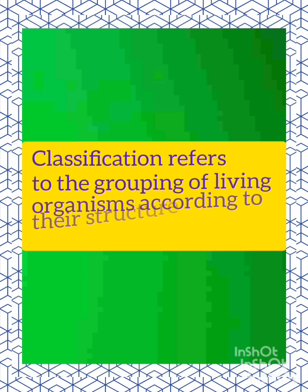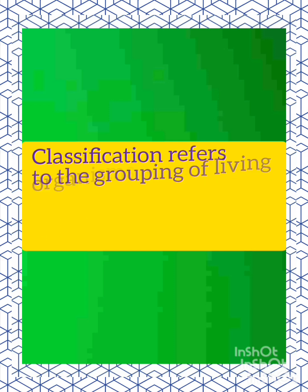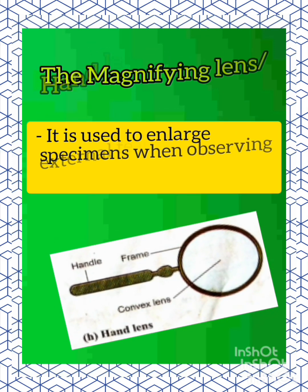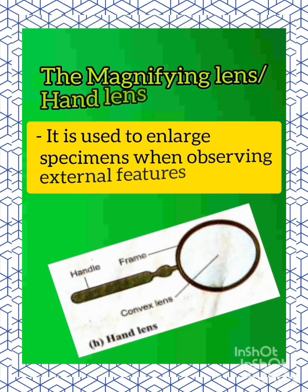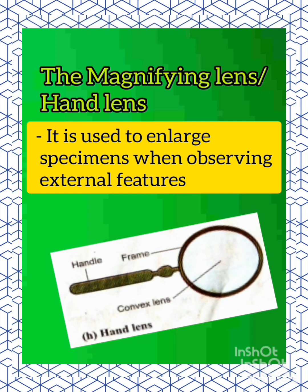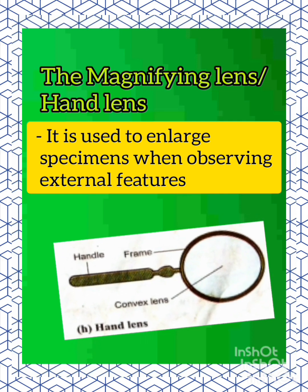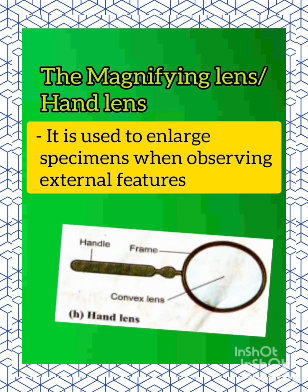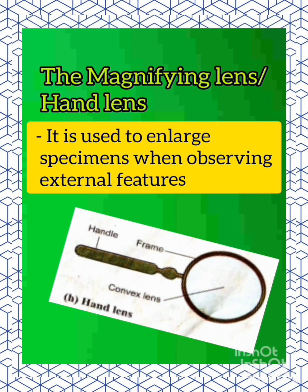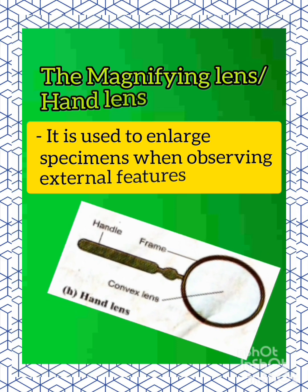In classification, we use an apparatus called the magnifying lens. It is used to enlarge specimens when observing external features. Here is a diagram of the magnifying lens.